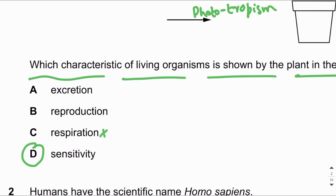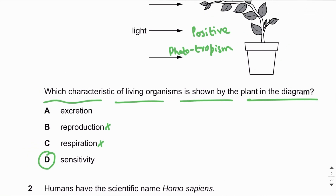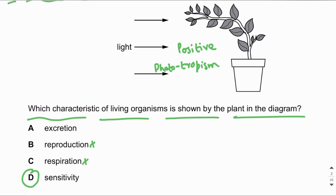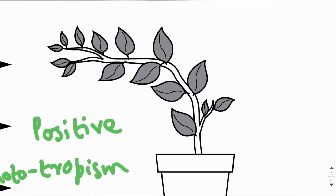This is not respiration, because respiration involves the breakdown of glucose using oxygen to obtain energy — that is aerobic respiration — or breakdown of glucose without oxygen, which is anaerobic respiration. It is not reproduction, because reproduction could be sexual or asexual. It's not excretion either, because in plants excretion involves the removal of gases — for example, during the day oxygen is excreted and during the night carbon dioxide is excreted.